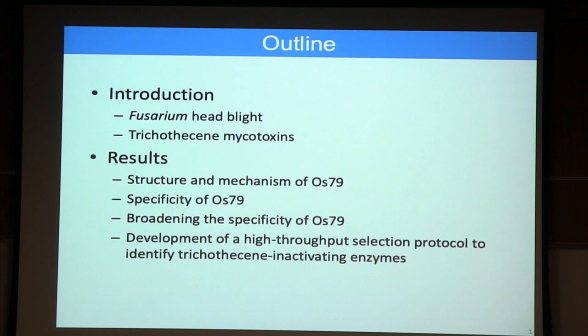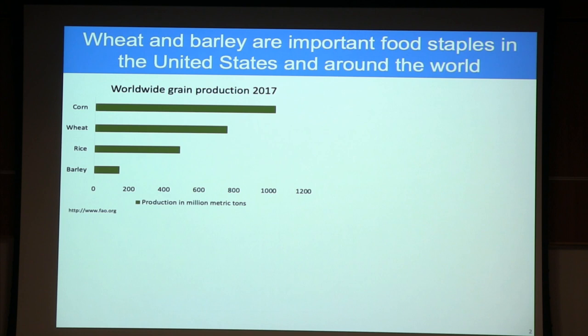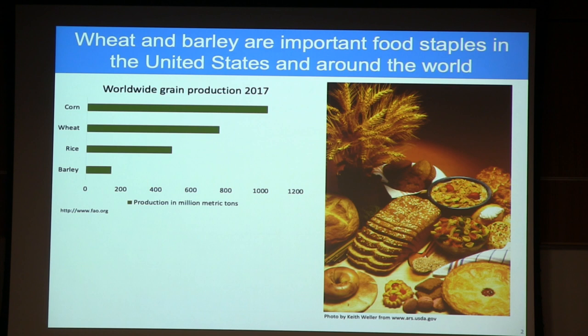In 2017, wheat and barley were the second and fourth most produced grains in the world. This probably doesn't come as a surprise given the vast number of food products made with wheat. This USDA image highlights how no matter what meal you're eating — breakfast, lunch, dinner, even dessert — wheat is very common throughout your everyday life.